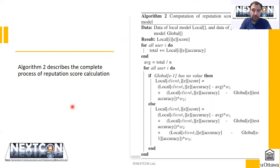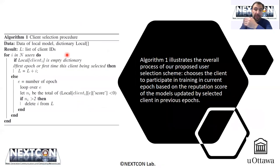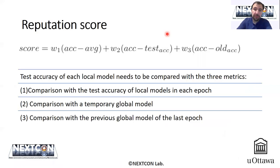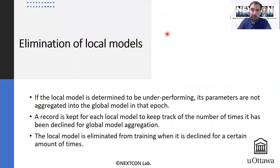This is a more detailed and formal explanation of the reputation score calculation. As I mentioned, I presented the client selection procedure algorithm in the previous slides. If a client's reputation is non-negative, the client is selected. If the client's reputation drops below a certain threshold, we do not eliminate the client immediately, but wait until that decline persists for a predetermined number of rounds. The local models of these clients are eliminated if they keep having non-positive reputation.